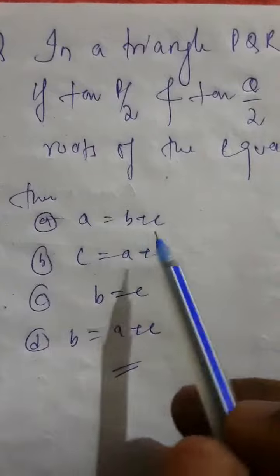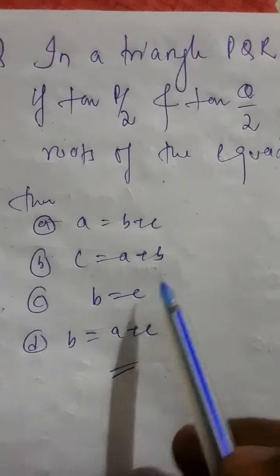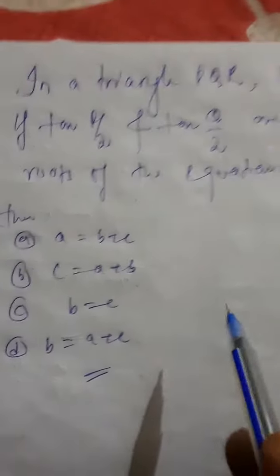The options are: A is equal to B plus C, C is equal to A plus B, B is equal to C, and B is equal to A plus C.